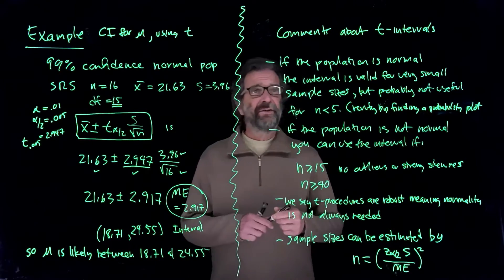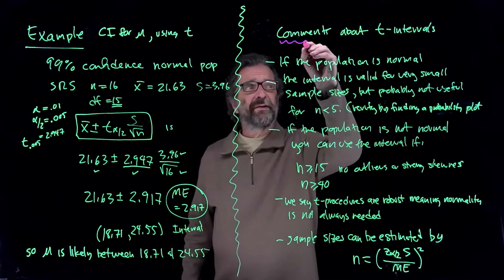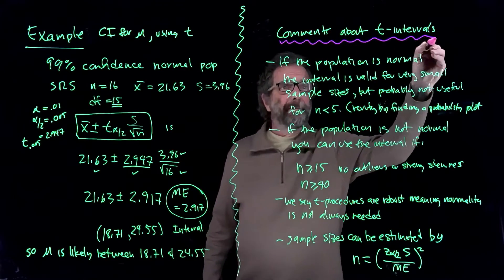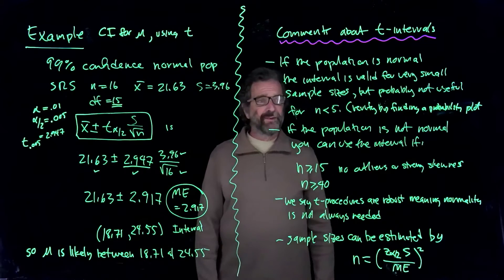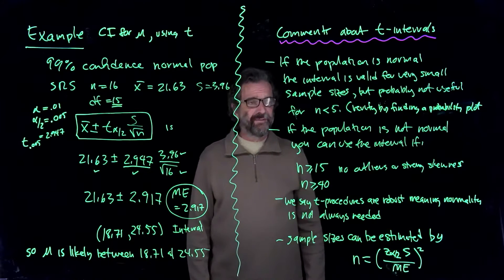And over here, just a few comments about T intervals in general. It says that if the population is normal, the interval is valid for very small sample sizes, but probably not useful for n less than 5.